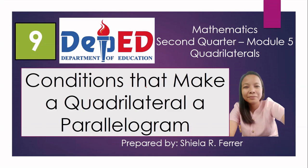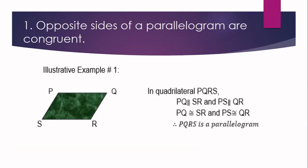Let us discuss them one by one. Number one: opposite sides of a parallelogram are congruent. In the given figure, quadrilateral PQRS, segment PQ is parallel to SR, and segment PS is parallel to segment QR.